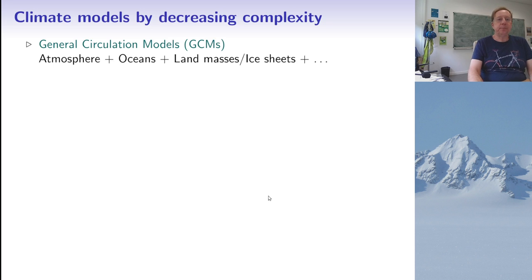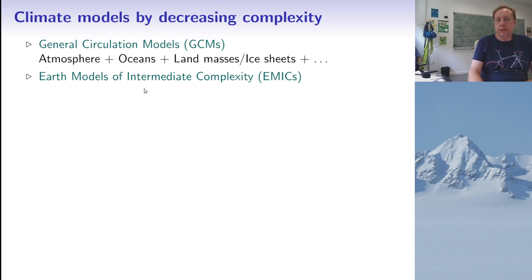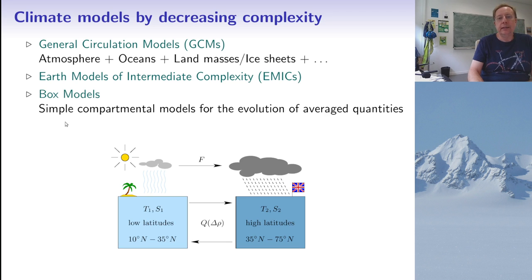So in climate science, we have, first of all, what is called GCMs, general circulation models, which are very precise models of the Earth that include the atmosphere, the oceans, land masses, ice sheets, and so on. These are huge models that you need computers to simulate. But then you also have simpler models. So I read about something called Earth Models of Intermediate Complexity or EMIC, I'm not sure how this acronym is widely used, but I've seen it at least. And then at the other end, you have very simple box models, which are simple models where you look at the evolution of average quantities over a small number of large boxes.